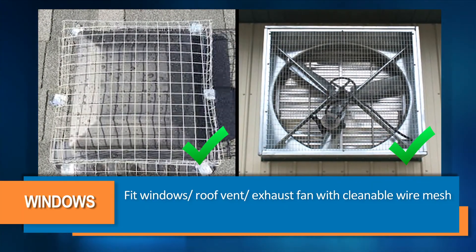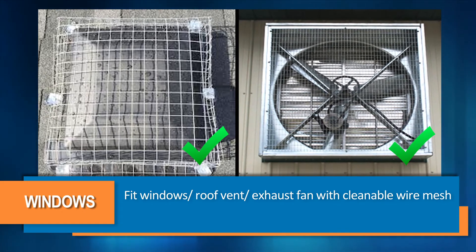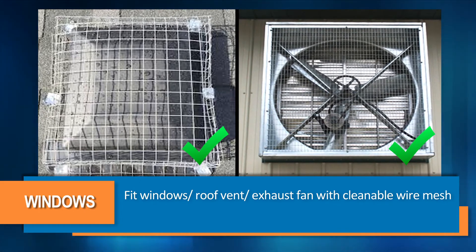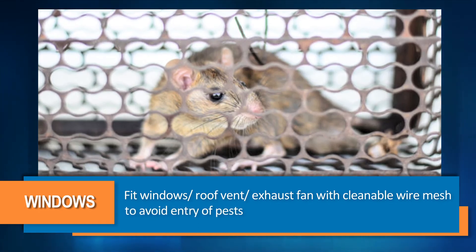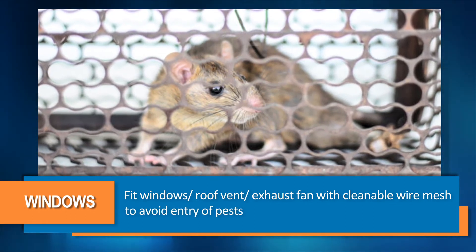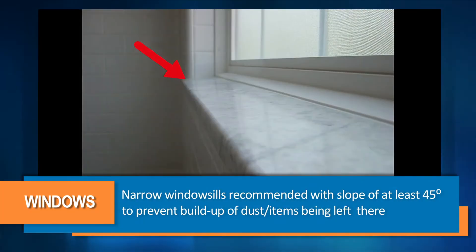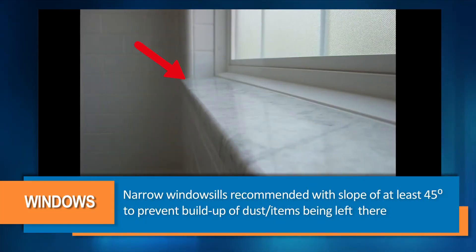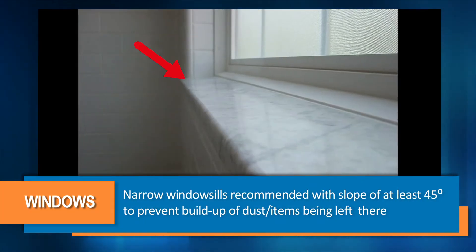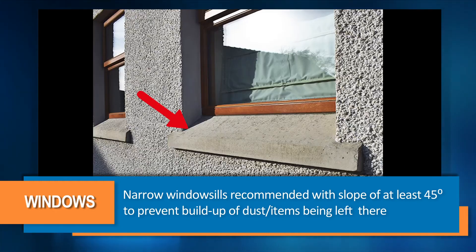Windows, roof vents or exhaust fans shall be fitted with cleanable wire mesh to avoid entry of pests when opening to external environment. Narrow window sills are recommended with a slope of at least 45 degrees to prevent build-up of dust as well as items being left there.